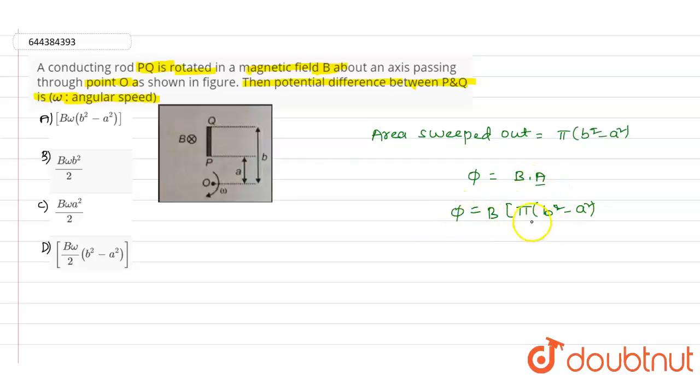So flux phi will be equals to B into pi into b squared minus a squared. Induced emf value capital E will be equals to magnetic flux divided by time.